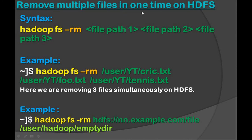Next, let's see how to remove multiple files at one time on HDFS. In the same way we remove a single file, we can remove multiple files. The syntax is: hadoop fs -rm file1 file2 file3, and so on. For example: hadoop fs -rm first_file second_file third_file. Hadoop will delete all these files from the location simultaneously — here we are removing three files at once on HDFS.